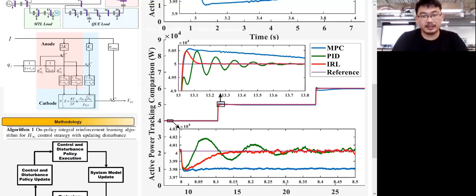MPC can no longer track the reference anymore because all the optimization and the prediction process is based on the erroneous system model after the parameter variations. This proves the superiority of our proposed integral reinforcement learning method.